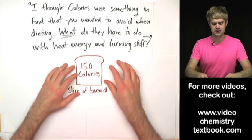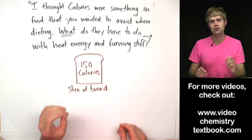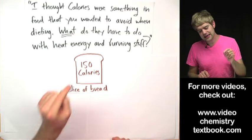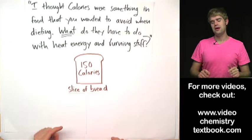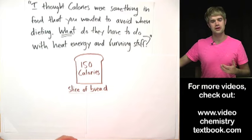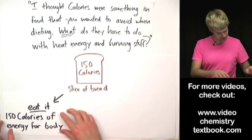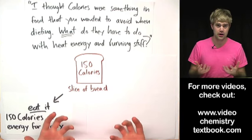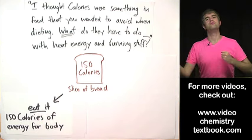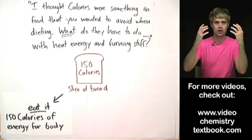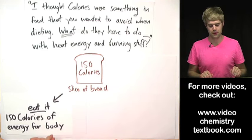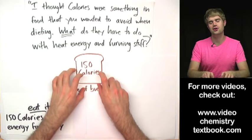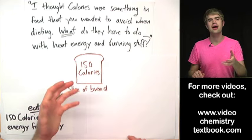So let's say we have a slice of bread. It has 150 calories in it. If you eat this bread it will release those 150 calories and then your body can use them. So I can eat the bread and now my body has 150 calories of energy and it can use this energy to move my muscles, make my brain work, do all this sort of stuff that bodies need energy to do.